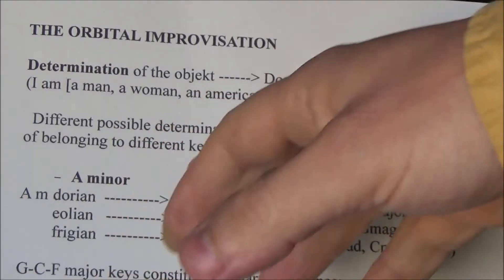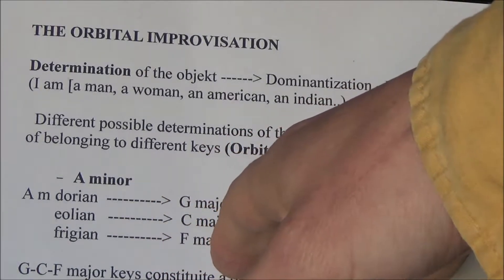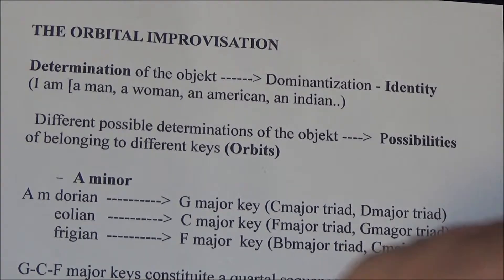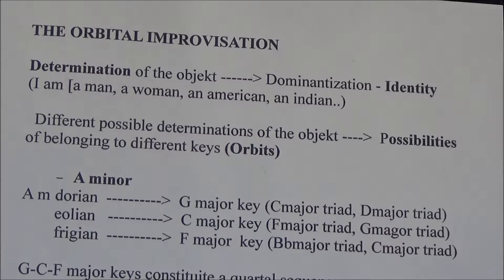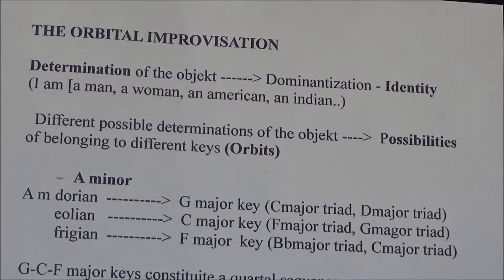A minor — starting from this basic determination, A minor — belonging to the G major key, so A minor Dorian; or belonging to the C major key, so we get A minor Aeolian; or to F major key, so we get A minor Phrygian. This is a finer determination. So, behind the minor, behind this basic determination, we can go more fine in determination.